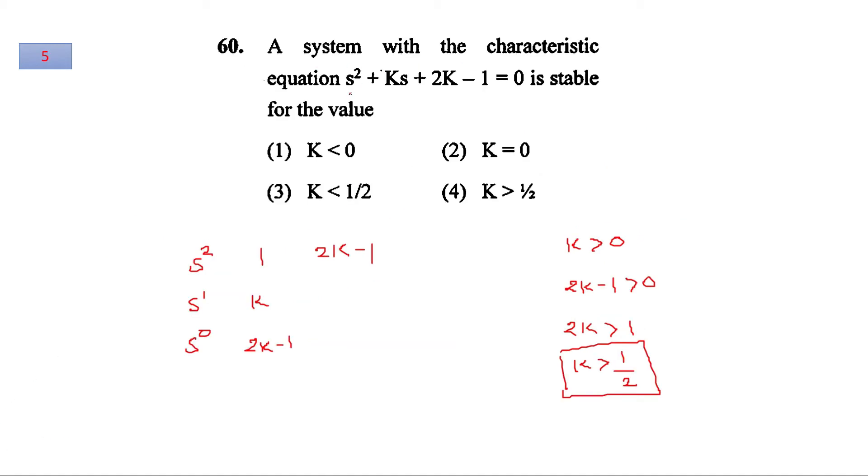In question number 5, the characteristic equation of a system is given and we have to comment on the stability considering the value of gain k. Now to find the value of k, we are framing the Routh array from s square to s zero. This element will be 2k minus 1. Now for the system to be stable, this first column, all signs should be same. So considering them as positive, 1 is positive. For this value to be positive, it should be greater than 0, and 2k minus 1 should be greater than 0. So k should be greater than 1 by 2. Question number 5 will have the correct answer as option number 4.